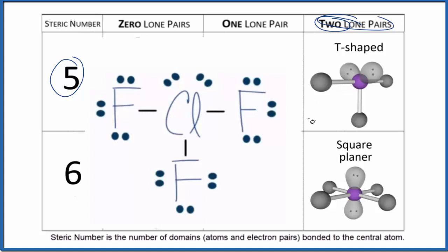If you're using the AXE notation, A, that's the central atom, X, those are the atoms that are bonded, and then E, those are the lone pairs. So we have AX3 and then E, one, two. And if you look up AX3E2, you find out that you have a T-shaped molecular geometry.